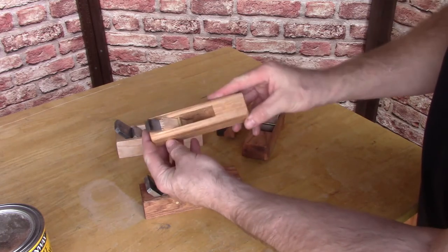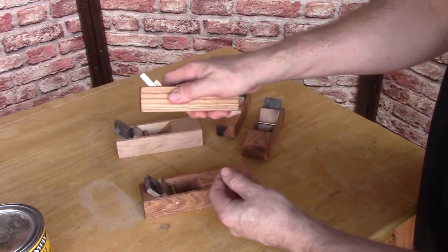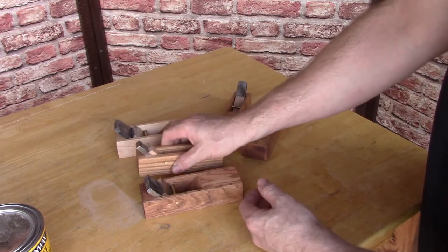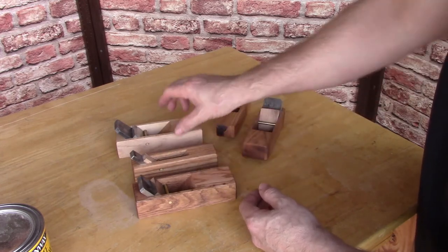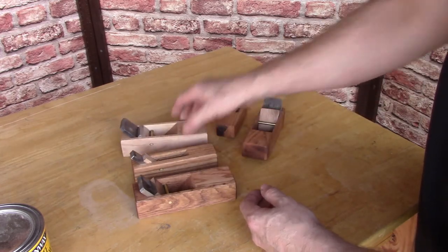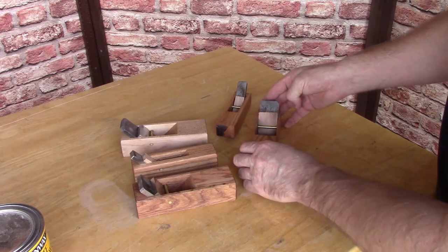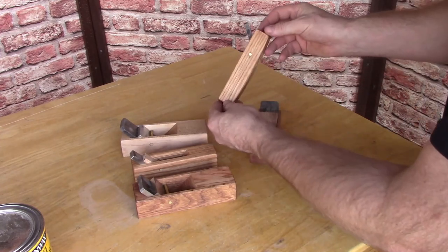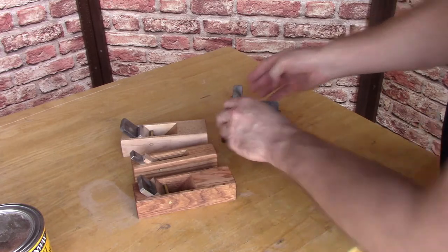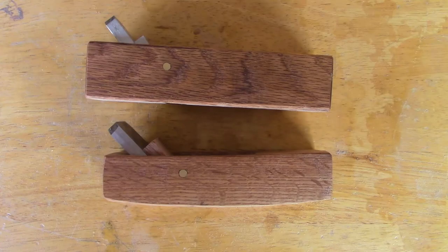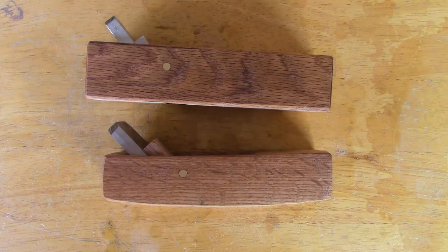Additionally, I've made narrow planes with irons half an inch wide. And I've made two compass planes with soles that are curved toe to heel. These are for planing the inside of the curve of scabbards. If you're considering making your own scabbard planes, I recommend making at least two of them, one flat-soled and one compass-soled.